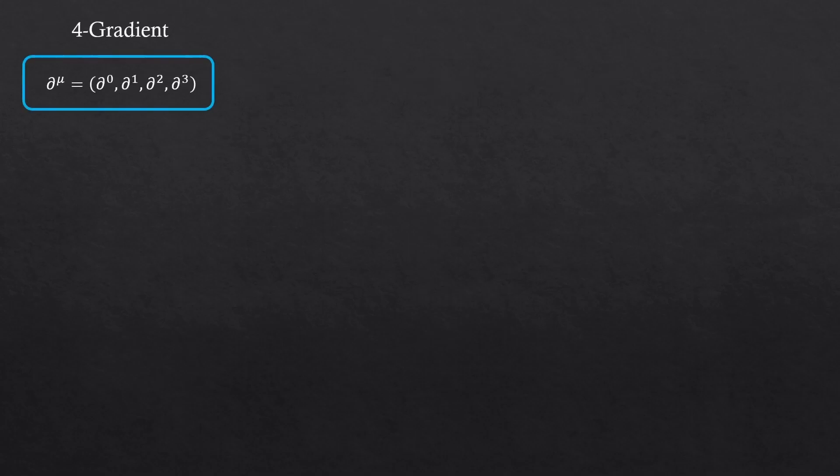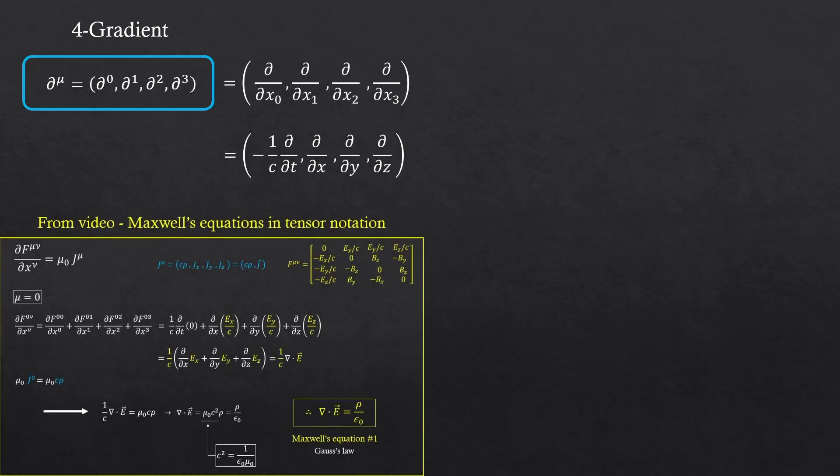Now, let's look at the 4-gradient. These are the derivatives, d over dx0, d over dx1, d over dx2, d over dx3. More exactly, they're the space-time derivatives. But for those who have watched my other video, Maxwell's equations in tensor notation, might have noticed something. In that video, we had the elements all positive. Why does this first element alone have a negative sign? Take a look carefully.